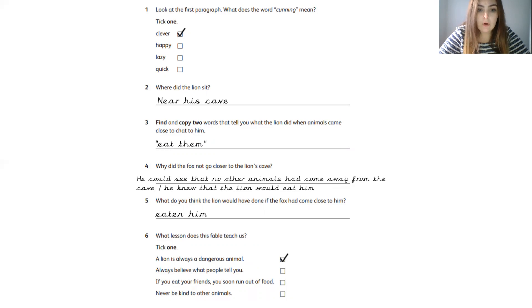Question number four. Why did the fox not go closer to the lion's cave? Give yourself a mark if you wrote something along the lines of that he could see that no other animals had come away from the cave or that he knew that the lion was going to eat him.